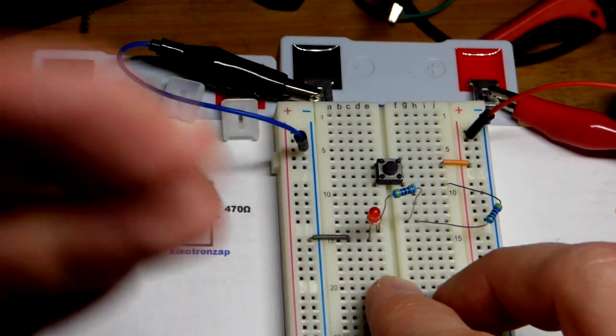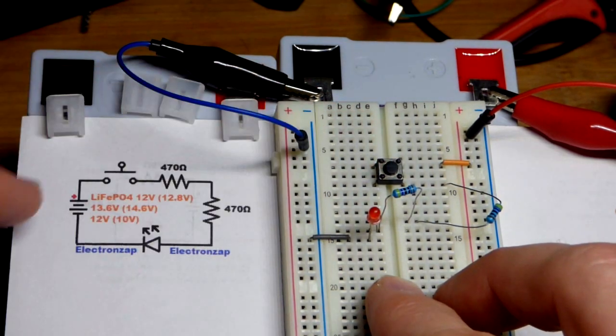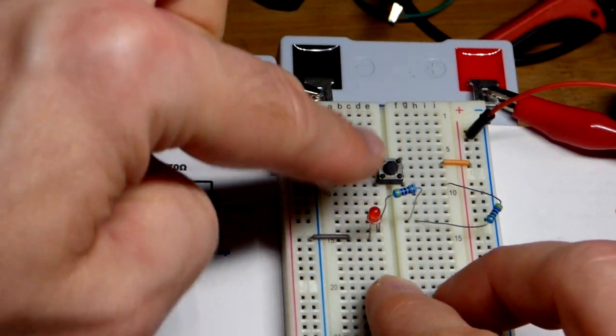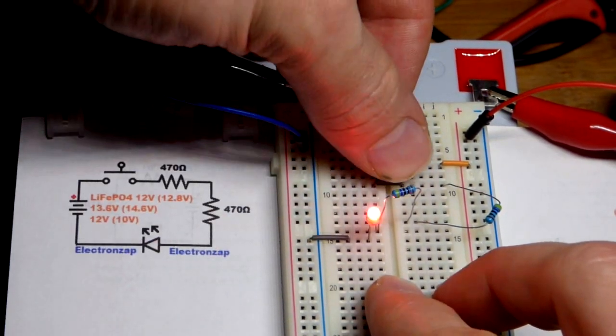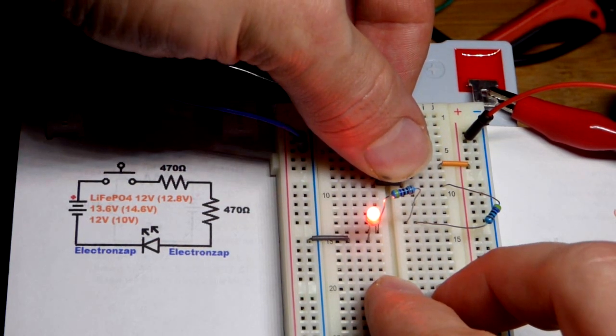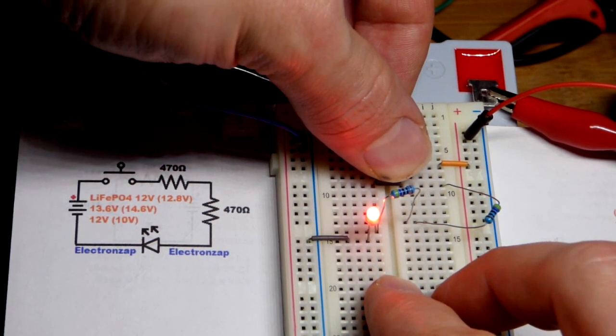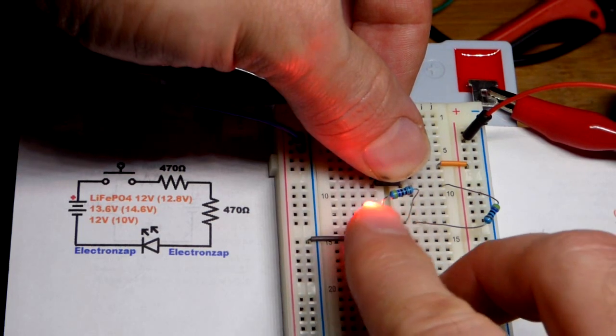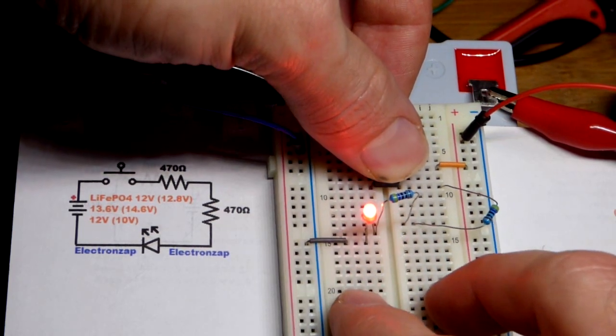The circuit is off when the switch is open, so there's a gap right now between the top and the bottom there. If I press the button, then we bridge that gap and we have a connection. Now current can flow, and in this case, the LED can light up.